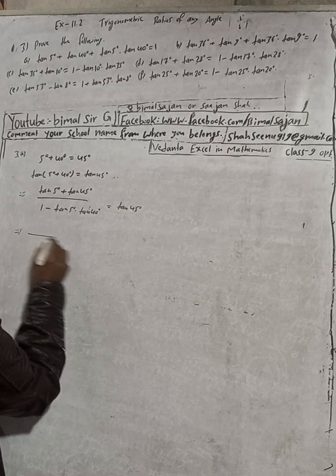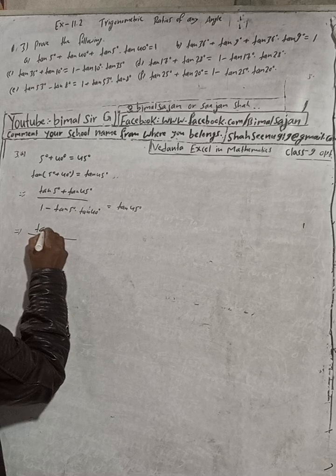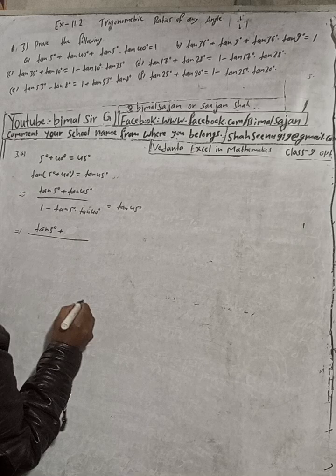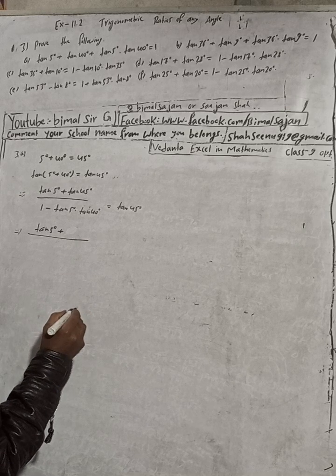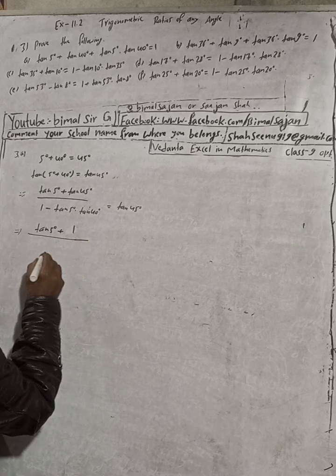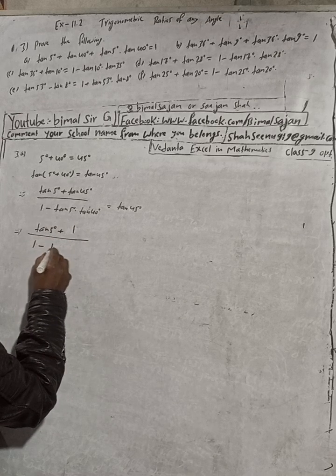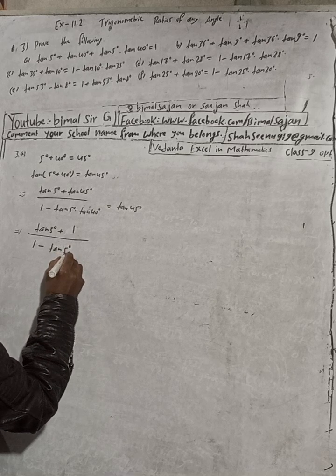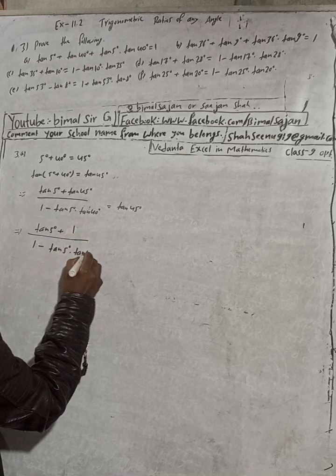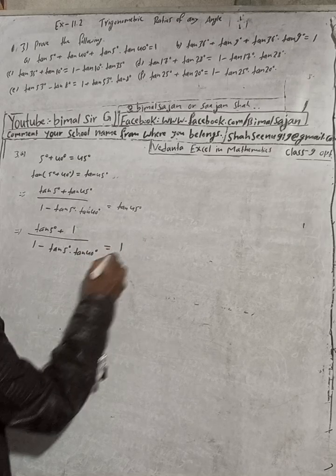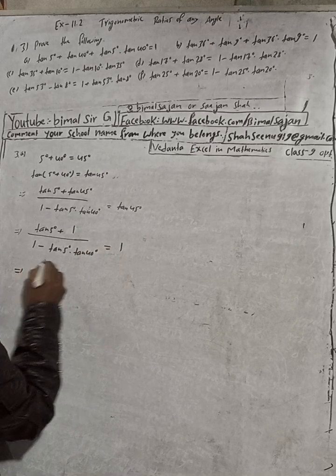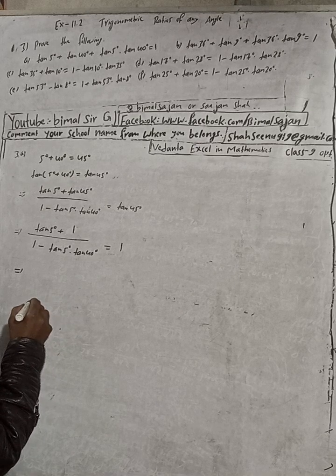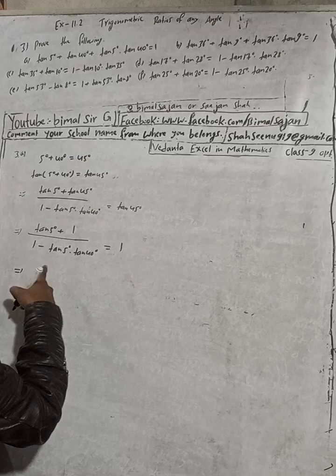So this implies: tan5° + tan40° divided by 1 − tan5°·tan40° = tan45°. The value of tan45° is 1. Now we cross multiply.